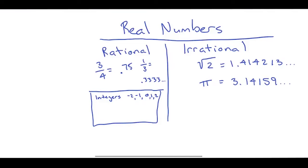Then within integers, you have whole numbers. And those starting with zero. So zero, one, two, three.